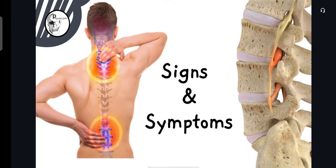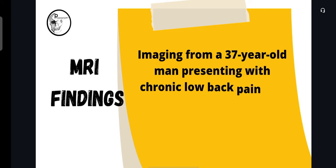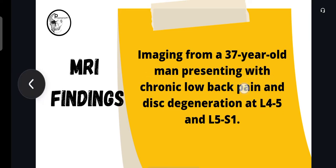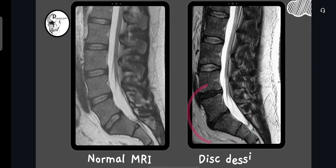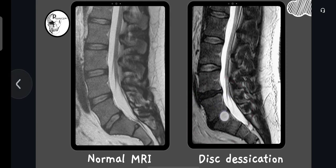Let's see the signs and symptoms. When there is disc desiccation, there will be pain, there will be numbness, and there will be radiating pain to the area affected. The previous MRI we have seen is an imaging of a 37-year-old man presenting with chronic low back pain and severe disc degeneration or disc desiccation at the level of L4-L5 and L5-S1. The disc at L4-L5 is dehydrated and L5-S1 is also dehydrated, and that in turn causes low back pain and numbness radiating to the legs.